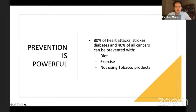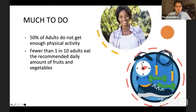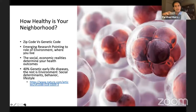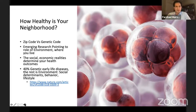Prevention is really powerful: 80% of heart attacks, strokes, diabetes, and 40% of all cancers can be prevented with diet, exercise, and not using tobacco products. Unfortunately, because of the social determinants of health being in a negative state and the standard American diet being poor, 50% of adults do not get their physical activity, and fewer than one in 10 adults eat the recommended daily fruits and vegetables. This is breaking down at the neighborhood level in terms of food deserts, access to healthy food, recreational facilities, and the built environment.